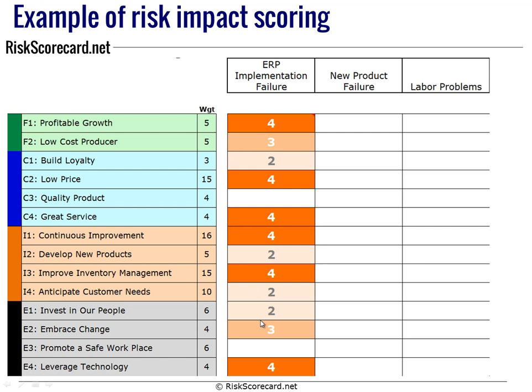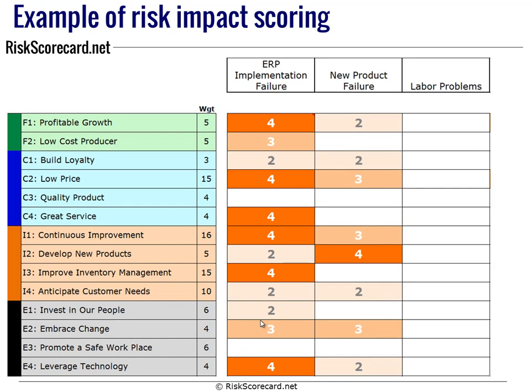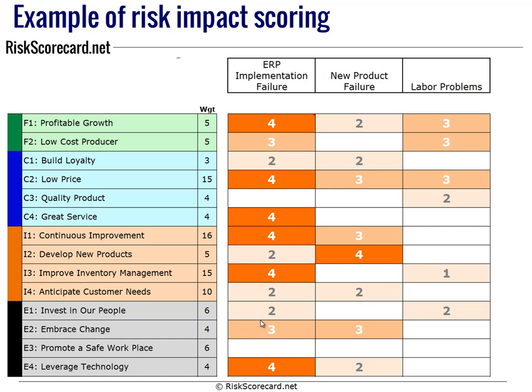We've now been able to evaluate the impact of this risk element against these strategic objectives. We then go on and do it for each of the other risk elements. Each risk element has a different strategic impact footprint. For example, on continuous improvement, ERP has an impact of 4, new product only 3, and there's no impact on continuous improvement if we have labor problems. This way we begin to get a more detailed view of what the impact of each risk element is.